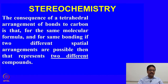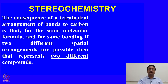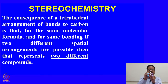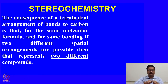The consequence of the tetrahedral arrangement of carbon bonds is that for the same molecular formula and same bonding, if two different spatial arrangements are possible, those two different orientations are two different compounds. For example, two molecules formed by four different groups may be the same if they can be superimposed on one another. But if one pair of bonds is connected in a different way, those two molecules will be different.